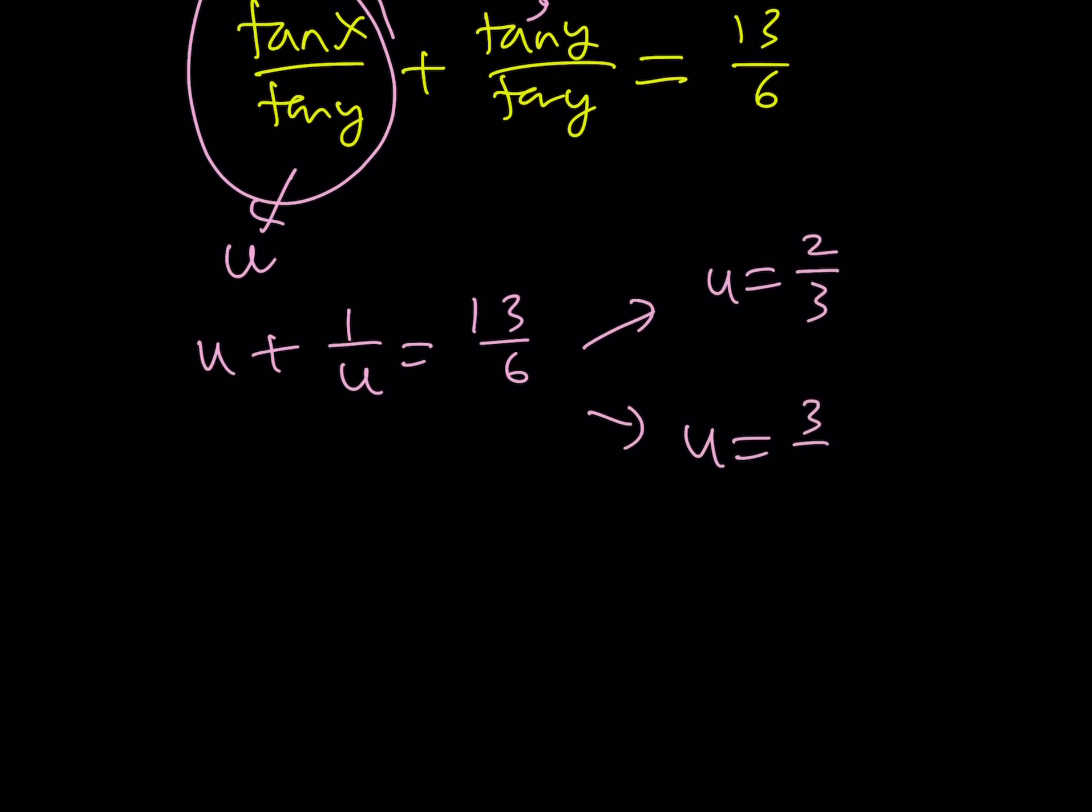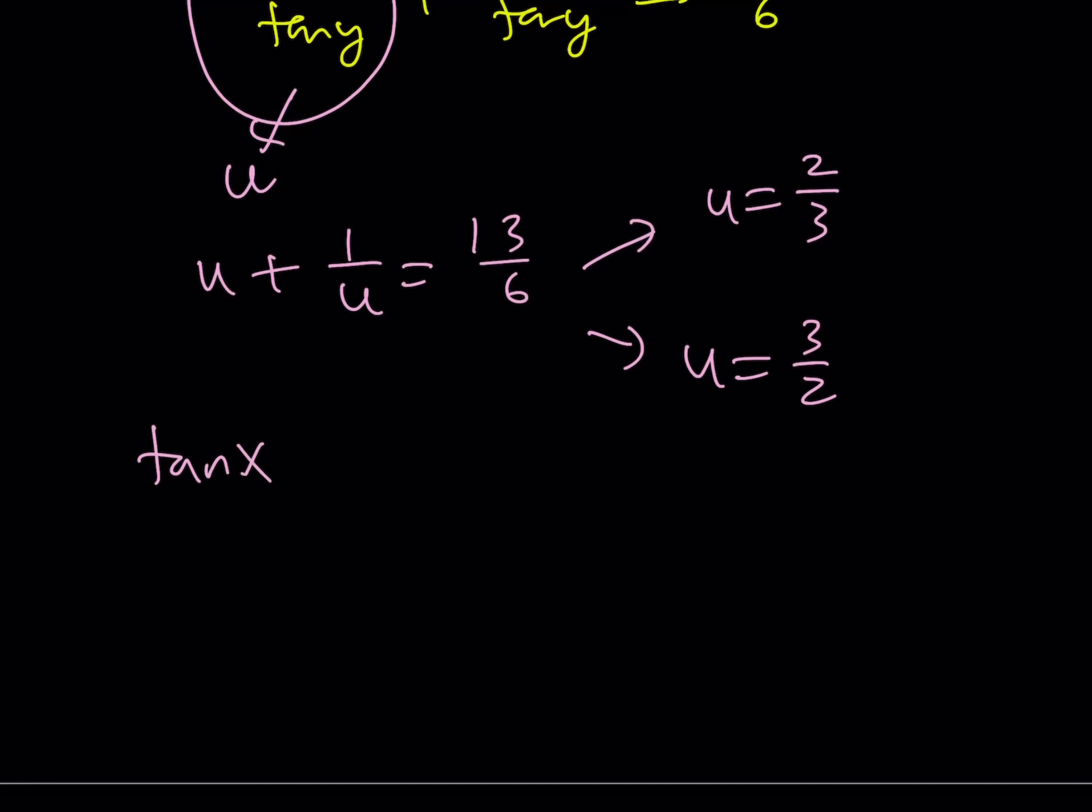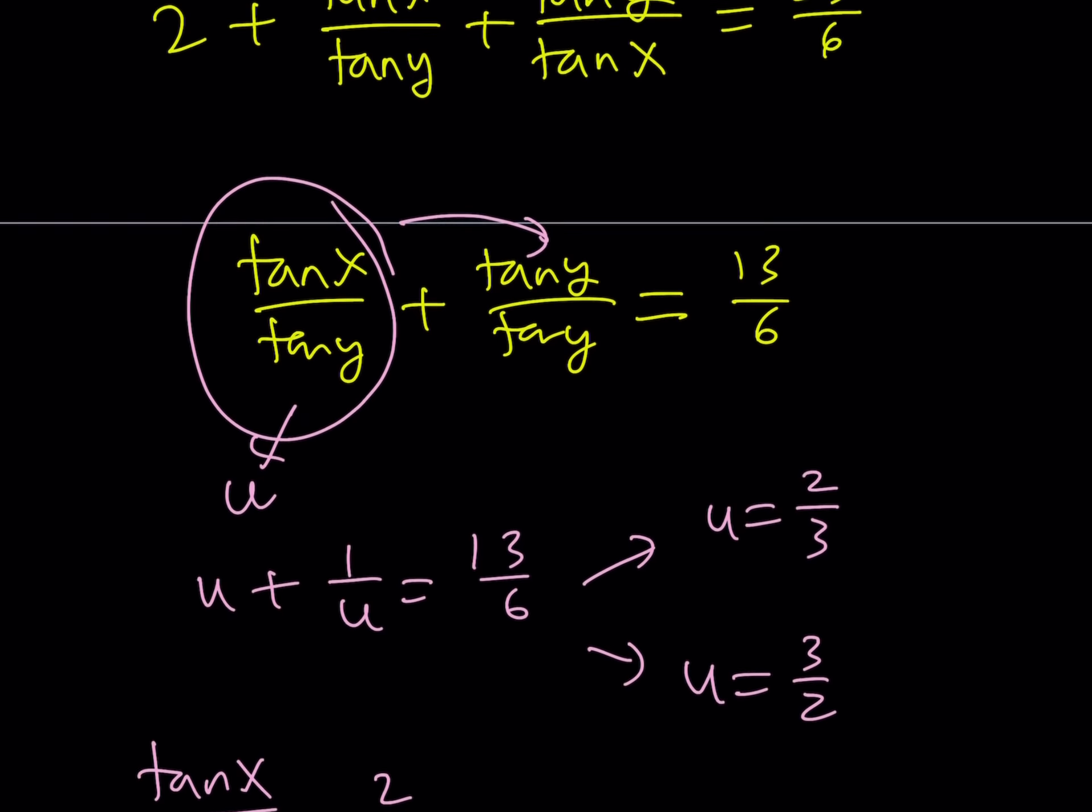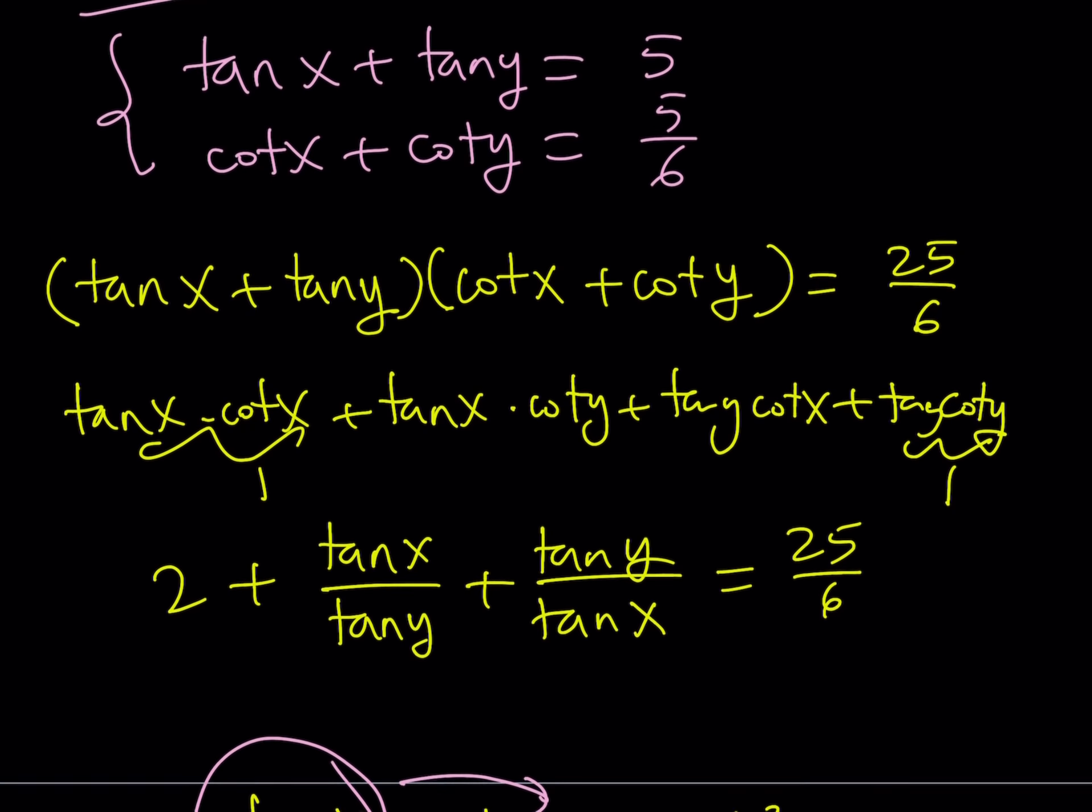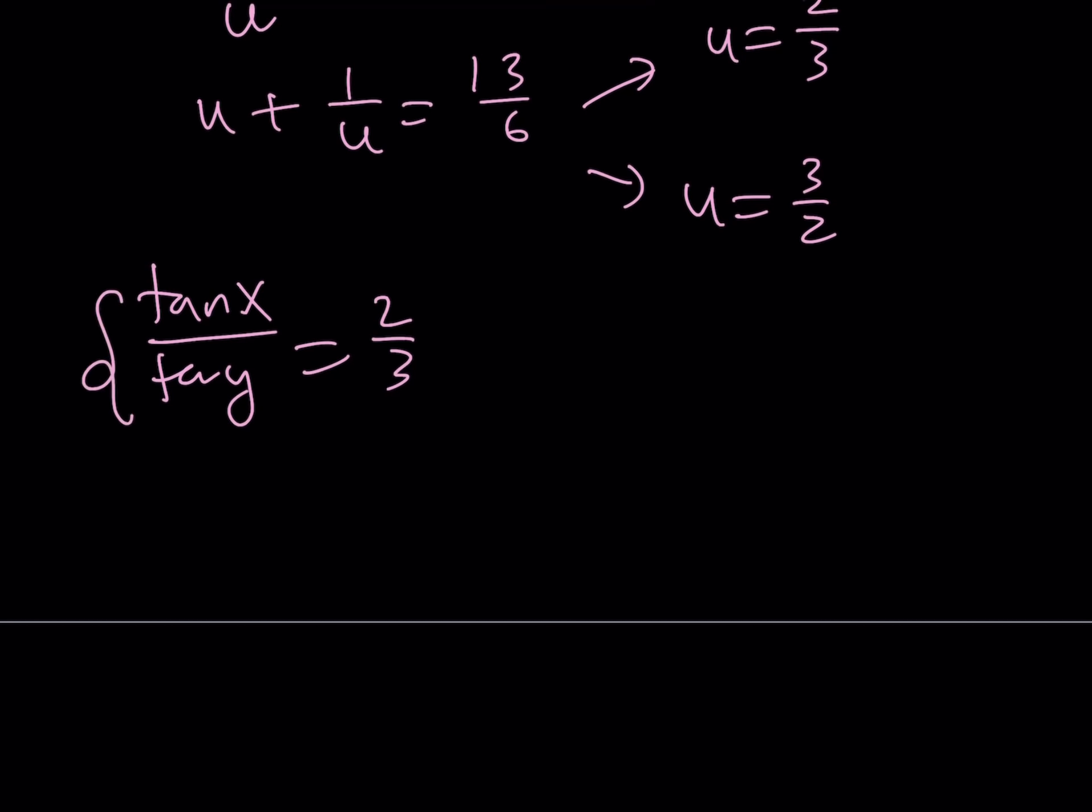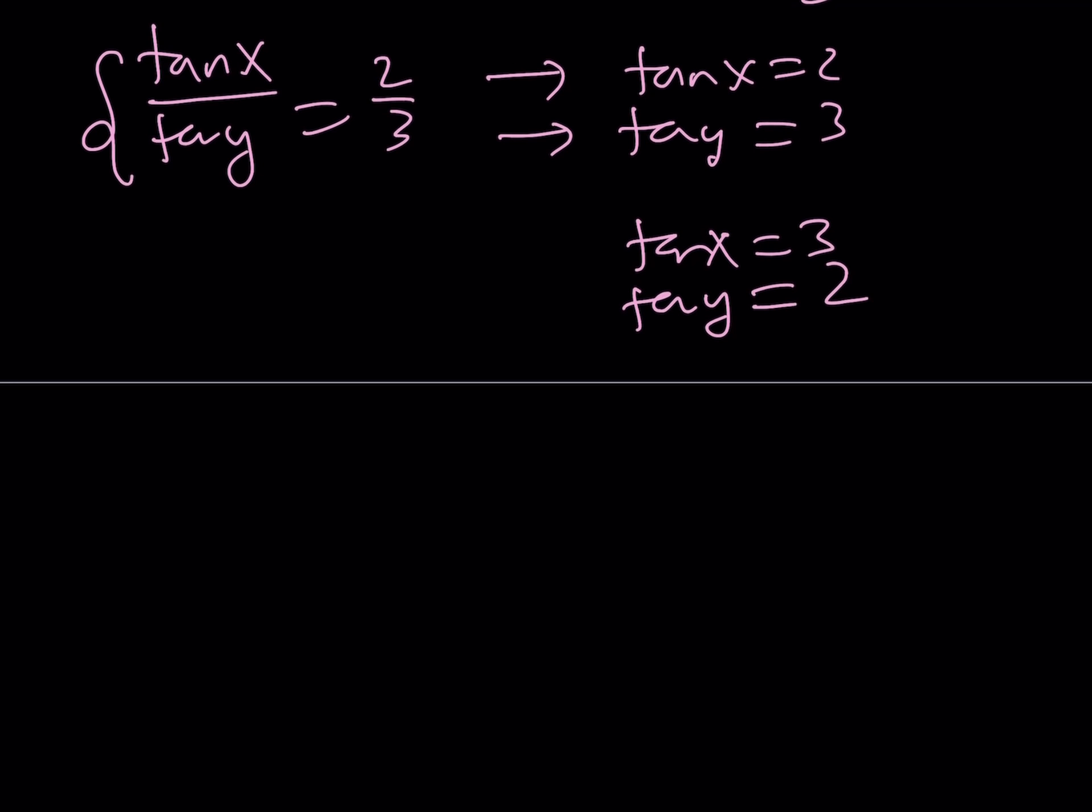So this gives us tangent x over tangent y equals 2 thirds. Let me work one out and the other one you can work on your own. What do I know? I know that tangent x plus tangent y equals 5. So I'm talking about two numbers whose sum is 5 and they're in the 2 to 3 ratio. This implies that tangent x needs to be 2 and tangent y needs to be 3, or vice versa, tangent x equals 3 and tangent y equals 2. And this pretty much gives us the same solutions and this brings us to the end of this video.